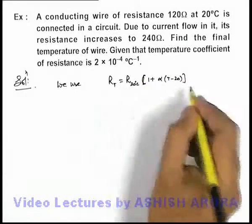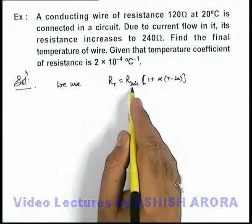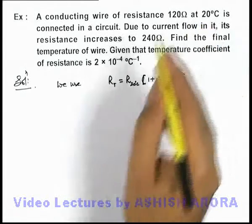This is the relation we are using for the variation in resistance with temperature. Here I am taking the reference temperature to be 20 degrees Celsius.